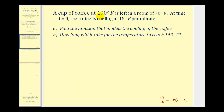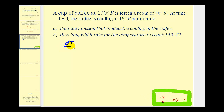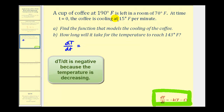A cup of coffee at 190 degrees Fahrenheit is left in a room of 70 degrees Fahrenheit. At time T equals zero, the coffee is cooling at 15 degrees Fahrenheit per minute. So using Newton's law of cooling, we need to recognize that dT/dt, the change in temperature with respect to time, is equal to negative 15 at T equals zero.